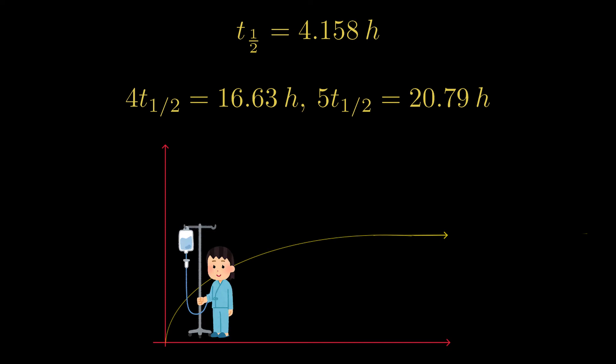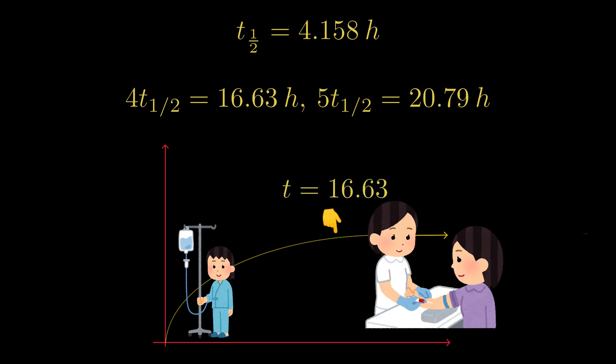So we could start the dose, wait at least 16 hours, and then take a blood draw to see where we're at with dosing. And that's the basics of a simple continuous infusion.